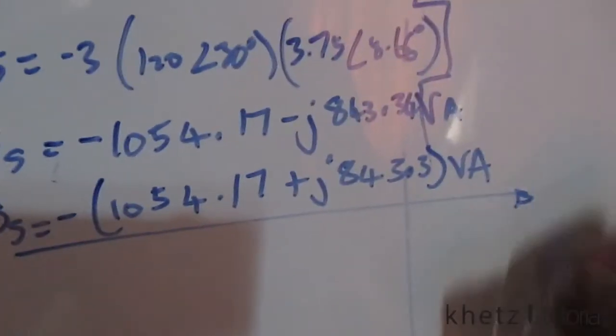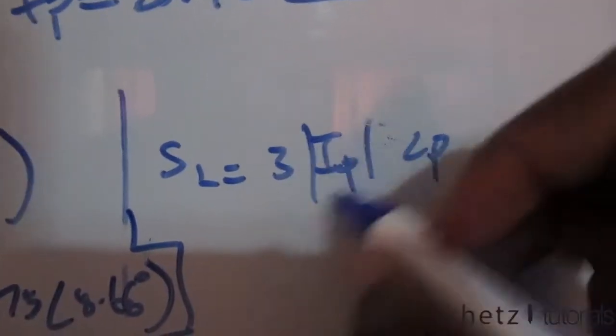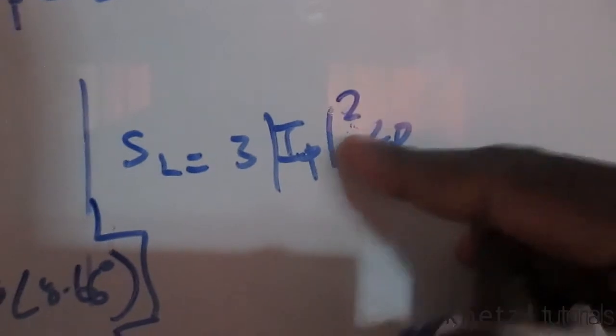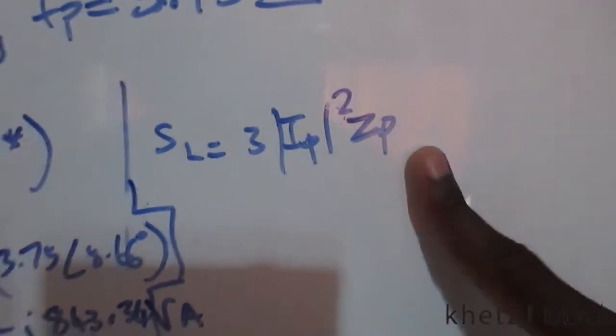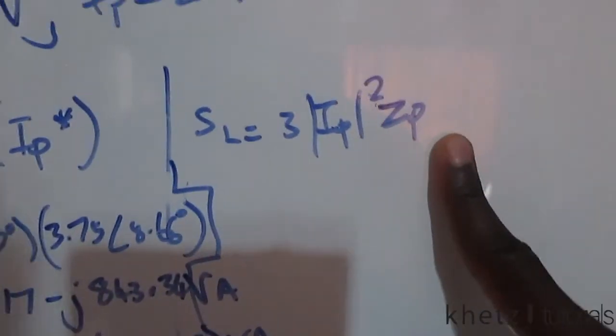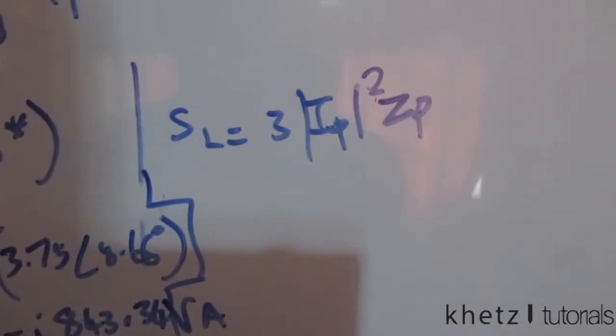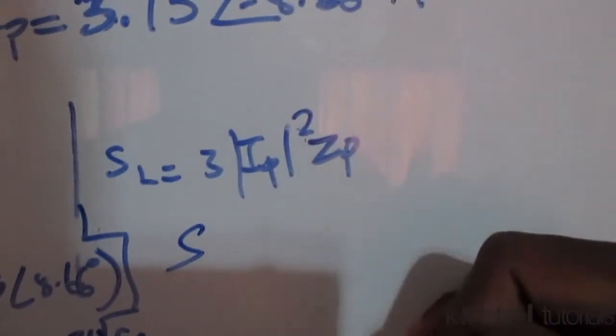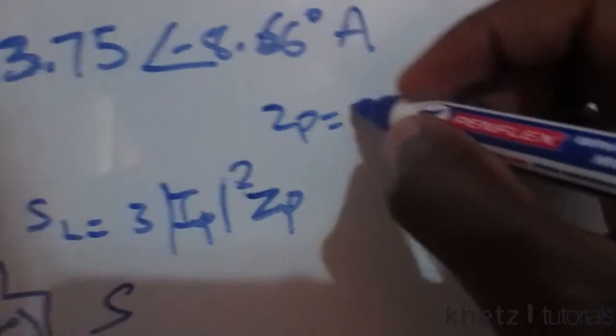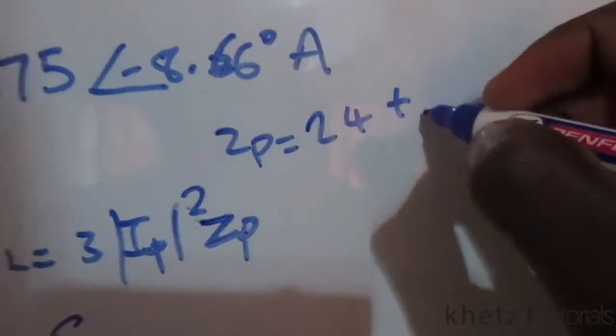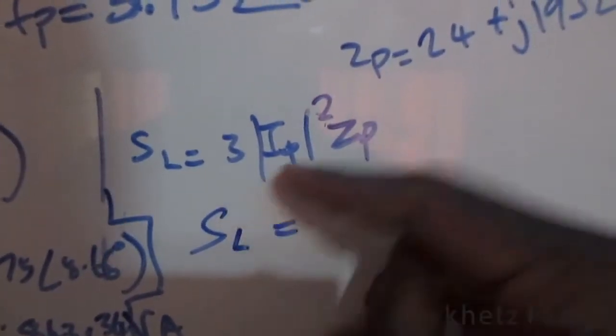Moving on to the load, you find the magnitude of your phase current squared, multiplied by 3, multiplied by the value of your impedance. The impedance is the phase impedance—you exclude all the line impedances and the impedance of the source. You just take the impedance of the phase, which was given as 24 + j19 ohms.